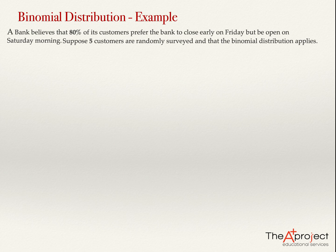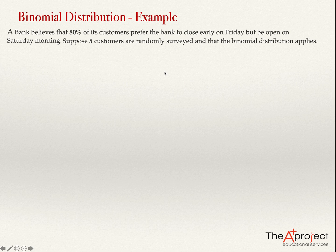For this to be a binomial distribution example, the number of customers needs to be a large number, so that 80% remains a constant. That way, any time I survey a customer, 80% of these customers prefer the Saturday option.